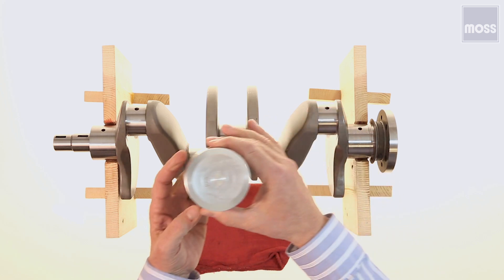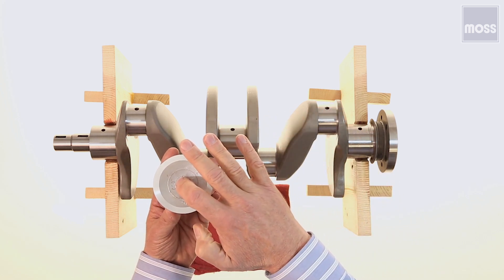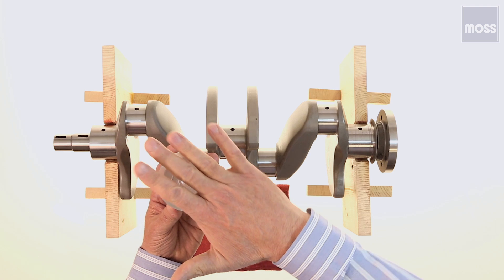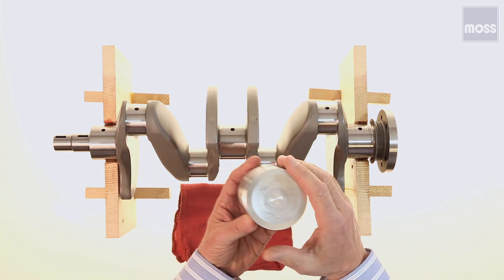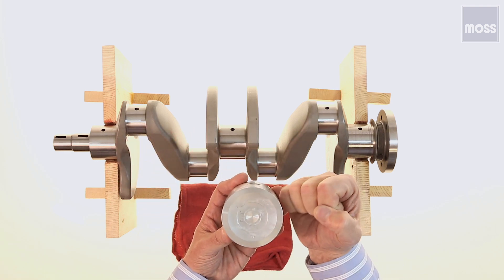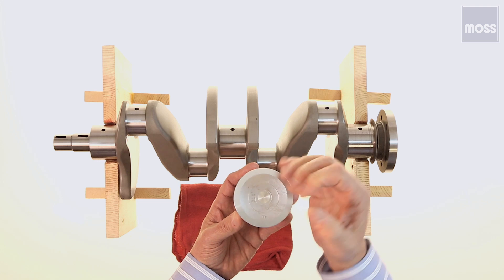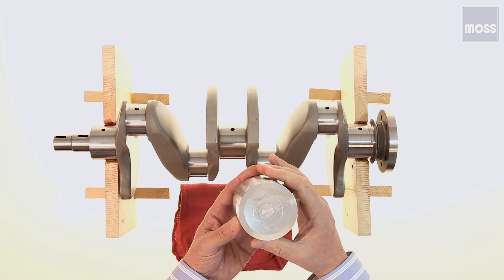While those two are doing that, at the exact same moment, number two is on its way down because it's just been a firing event and she's being pushed. Number three is also on its way down, but it's actually pulling - the intake valve is open and we're drawing in a fresh air-fuel mix for our next firing.